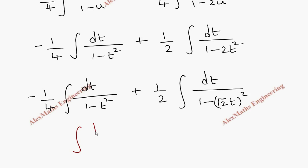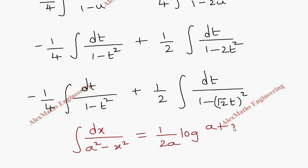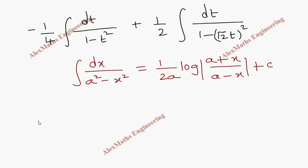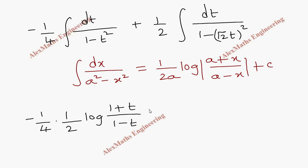We apply the formula: integral of dx/(a² - x²) = (1/2a)·log|(a + x)/(a - x)| + C. For the first term, a = 1, so 1/(2a) = 1/2. This gives (1/4)·(1/2)·log|(1 + t)/(1 - t)|, which is (-1/8)·log|(1 + t)/(1 - t)|.